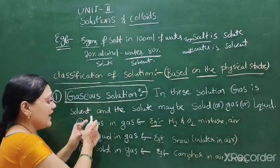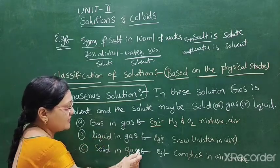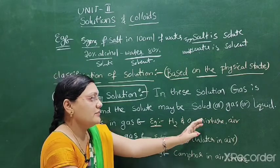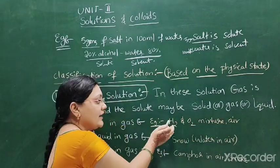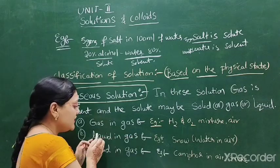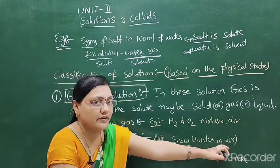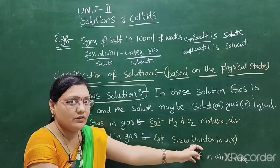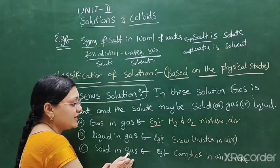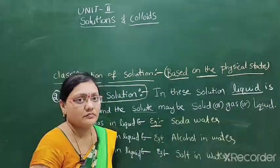Gaseous solutions are again three types. First is gas in gas — for example, hydrogen and oxygen mixture in air; air is the solvent and hydrogen and oxygen are the solutes. Second is liquid in gas — for example, water in air; gas is the solvent and liquid is the solute. Third is solid in gas — for example, camphor in air or smoke; solid is the solute and gas is the solvent.